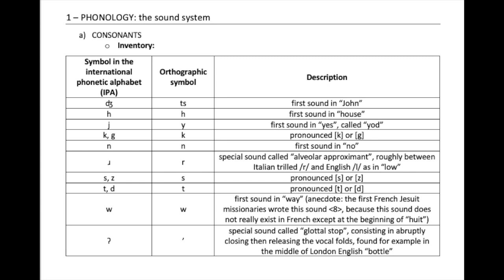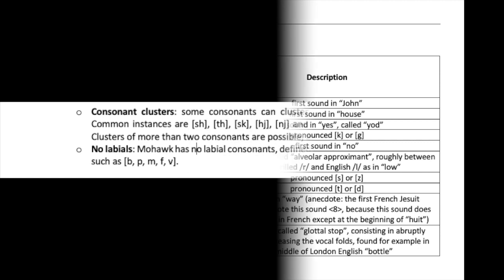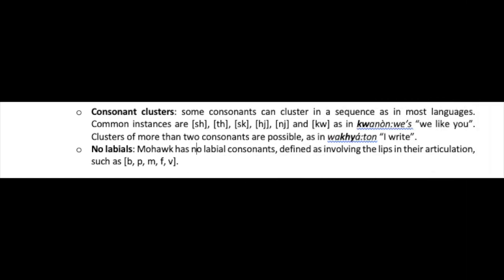The remaining consonants are S (which can also be pronounced Z), T (which can also be pronounced D), W as in way, and the glottal stop, found for example in the middle of London English 'bottle.' In Mohawk, as in most languages, consonants can cluster in sequences.